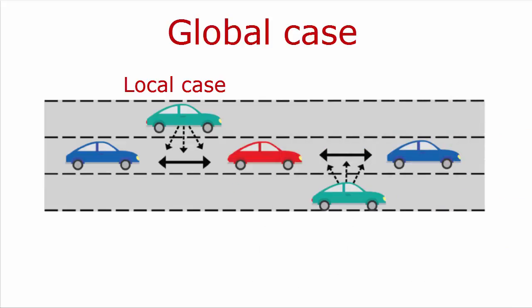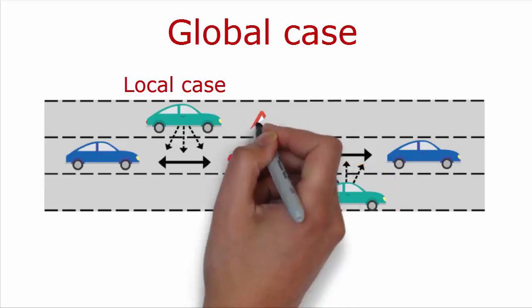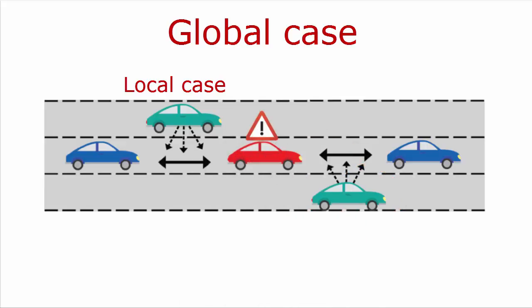But when we look globally, we can see that there might be another car that wants to change to the middle lane further ahead. And now the red car would receive conflicting requests. It's being asked to speed up and slow down at the same time. This is an issue that we wouldn't have come across when we checked the program locally, but it does come up in a bigger perspective.